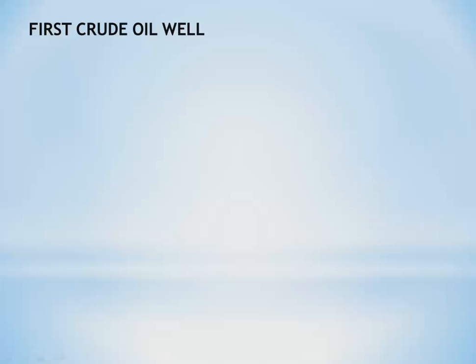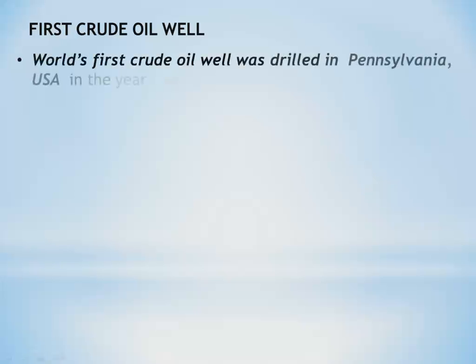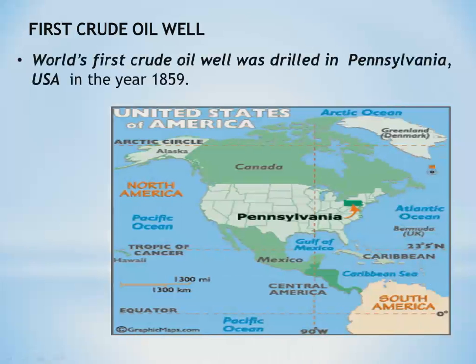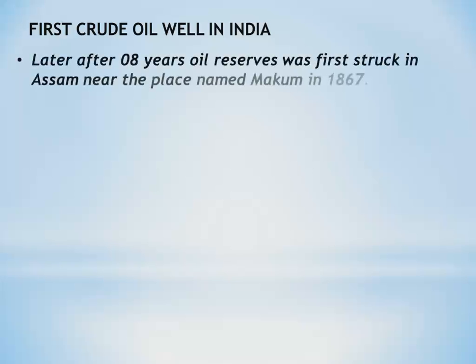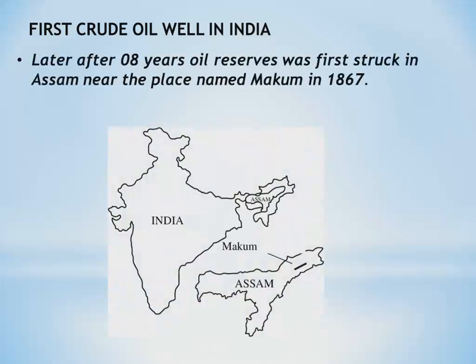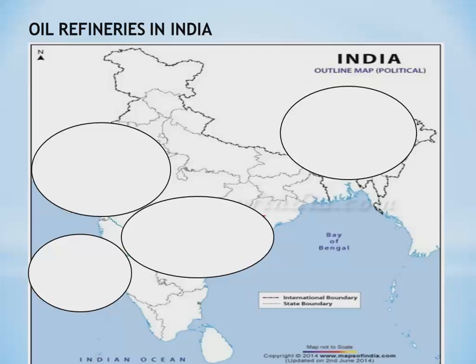The world's first crude oil well was drilled in Pennsylvania, USA in the year 1859. Later, after 8 years, oil reserves were first struck in Assam, near a place named Makum, in 1867.